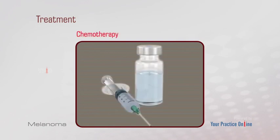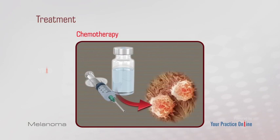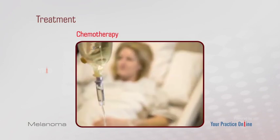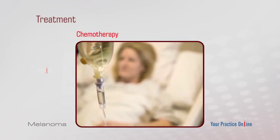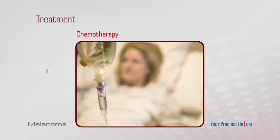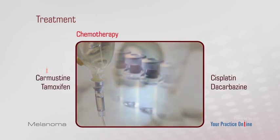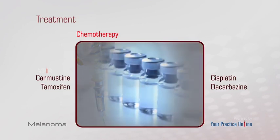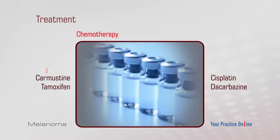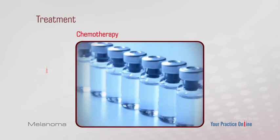Chemotherapy is the use of drugs to kill the cancer cells. The drugs are given in cycles, where a treatment period is followed by a recovery period before beginning another treatment period. Some of the drugs used are carmustine, tamoxifen, cisplatin, or dacarbazine. Combination regimens are also used in the management of melanoma.